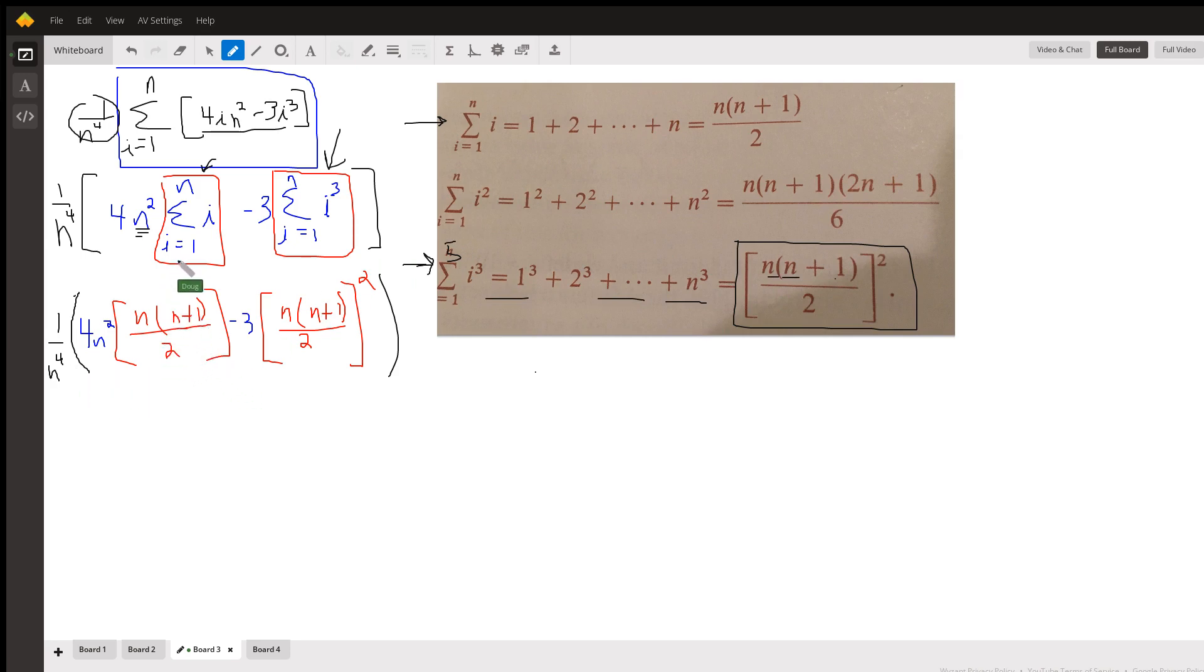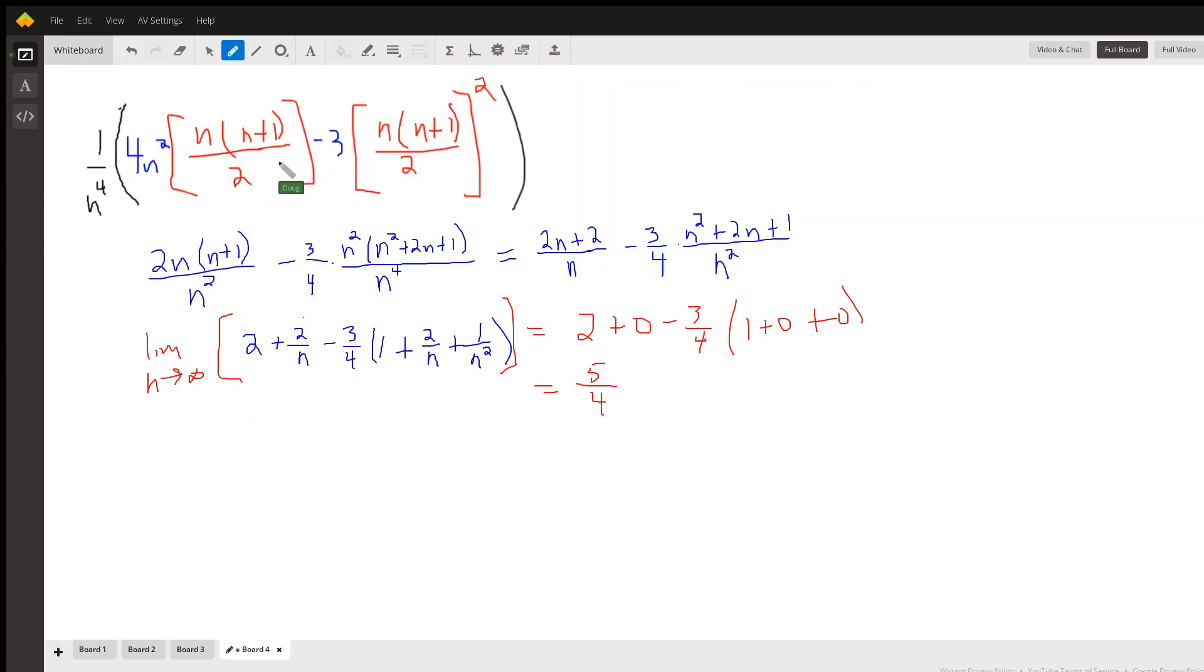Replace this with its equivalent and replace this with its equivalent. Now it's a matter of evaluating that expression, simplifying as much as possible, and taking a limit as n approaches infinity. Here I've recopied it. If you picture distributing this 1 over n to the fourth, n squared goes into n to the fourth n squared, this 2 goes into this 4, and we've got 2n times the quantity n plus 1.